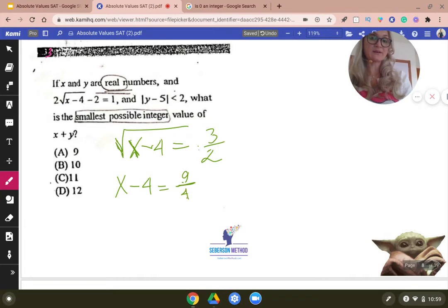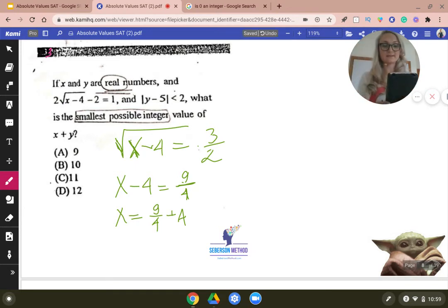Now I'm going to square both sides, which will give me x minus four is equal to nine fourths. And then I'm going to add four to the other side. So x is equal to nine fourths plus four. And this is a calculator section, so I'm going to use a calculator. And this is equal to six point two five. This value is definite. We don't have possibilities. It's going to be six point two five.